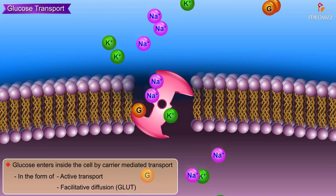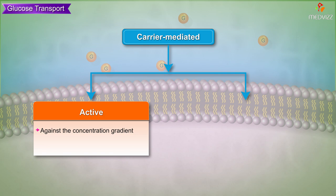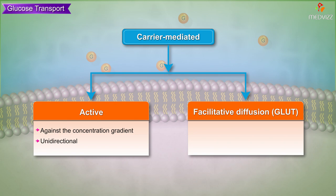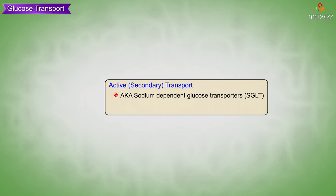Glucose transport occurs by means of glucose transporters, also known as GLUTs. Carrier-mediated transport is divided into active transport, which is against the concentration gradient and unidirectional, and facilitative diffusion or GLUT, which is down the concentration gradient and bidirectional. Active or secondary transport is also known as sodium-dependent glucose transporters (SGLT), coupled with the sodium-potassium ATPase pump.